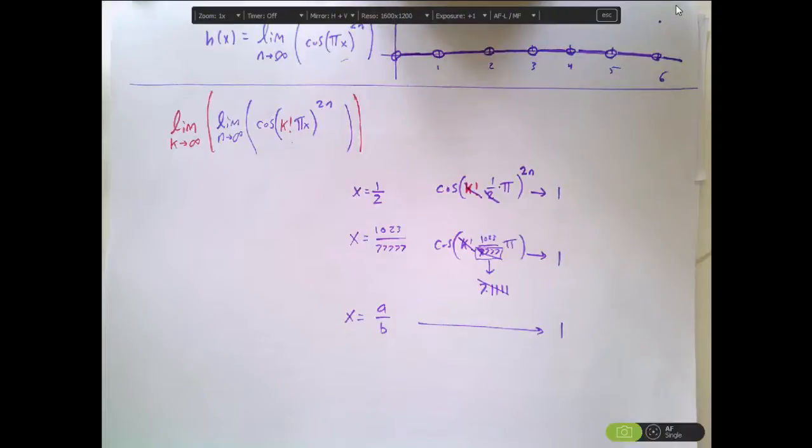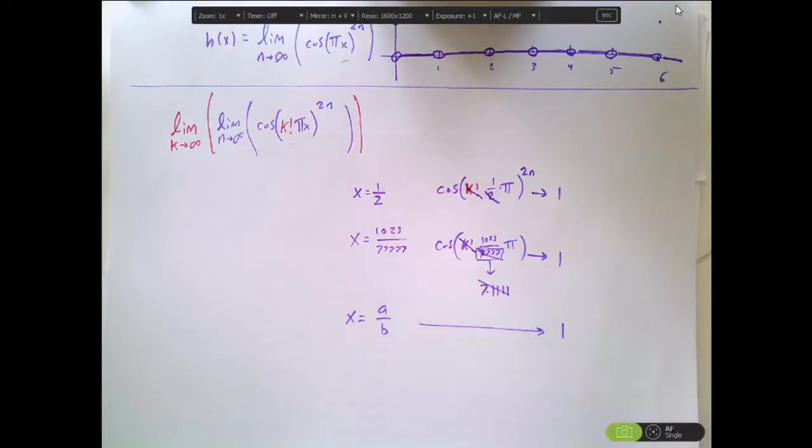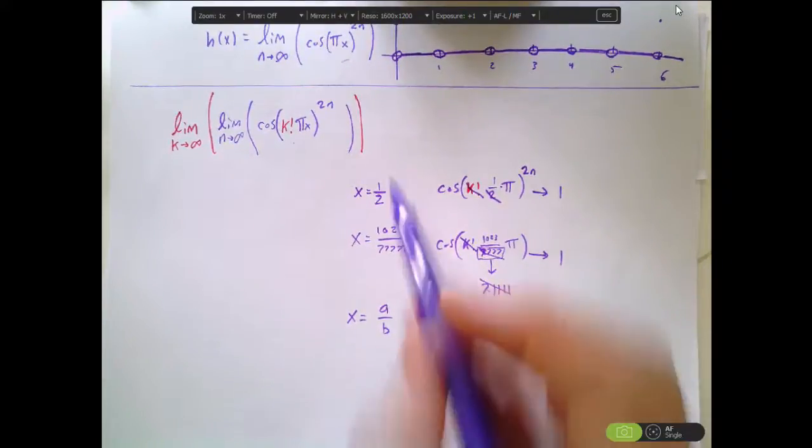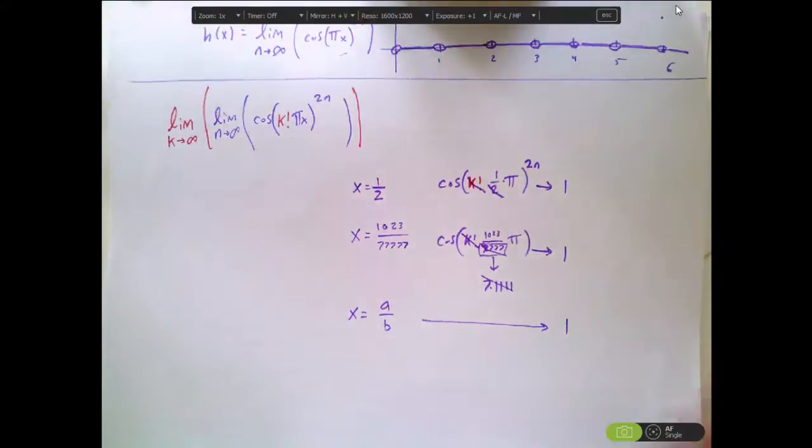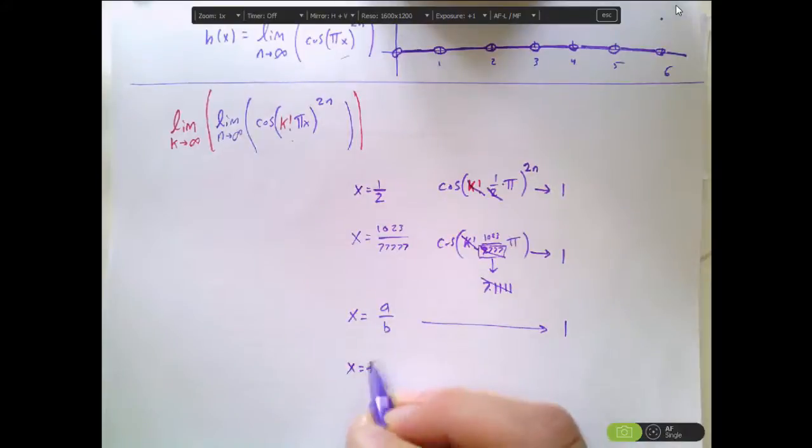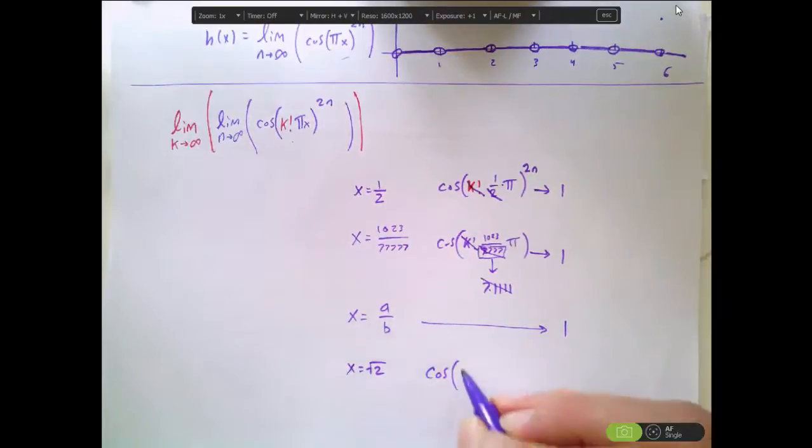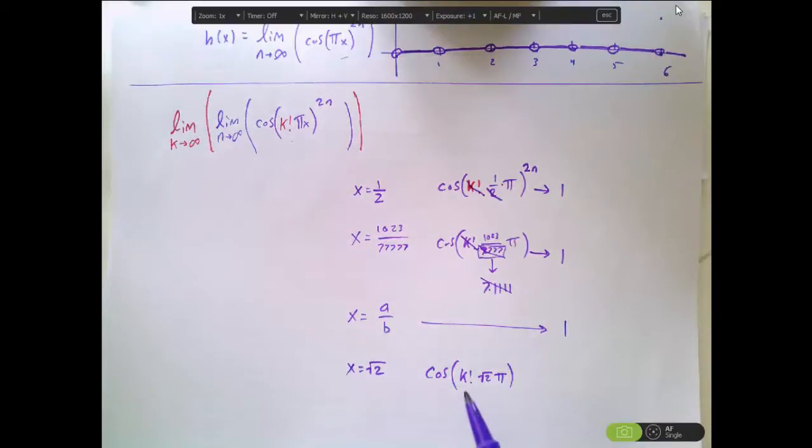Does that just mean that my function now is always 1 everywhere? Let's think about a number that is not a rational number and see what happens then. What happens if we have x = √2? We'll have cosine k factorial of √2 π.